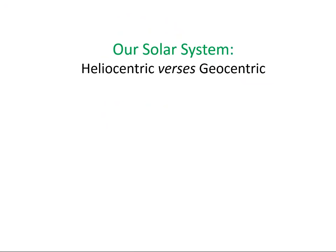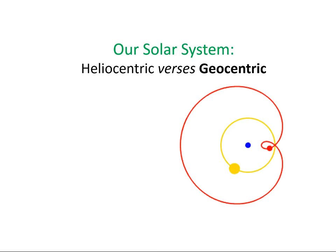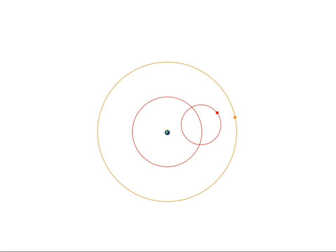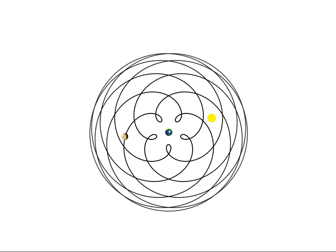Looking at heliocentric versus geocentric models of our solar system: in the heliocentric diagram, the sun is at the centre with Earth and Mars going around it. However, with the earth-centred geocentric model, the sun seems to go more or less around the Earth in a perfect circle, but the planet Mars makes epicycles. Here is an epicycle movement of a planet — the geocentric epicycle of Mercury, and one for Venus. There's a reason why I'm showing you this, as you will see later.